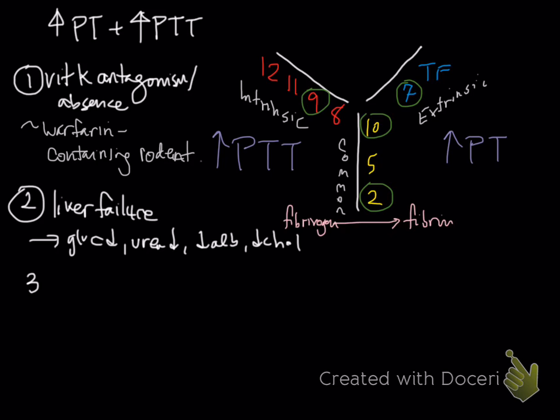The last cause that tends to cause an increase in both PT and PTT is something called DIC. We're going to talk more about this in the next lecture. This is disseminated intravascular coagulopathy. Due to various things, your clotting system's overactive and starts making lots of clots. While it makes all those clots, it consumes many clotting factors. You essentially get consumption of clotting factors and overproduction of clots.